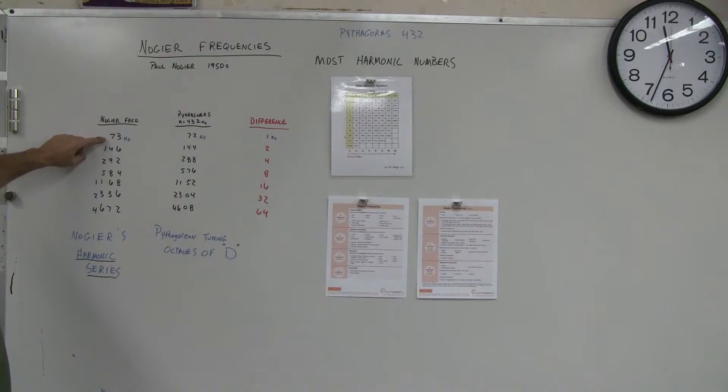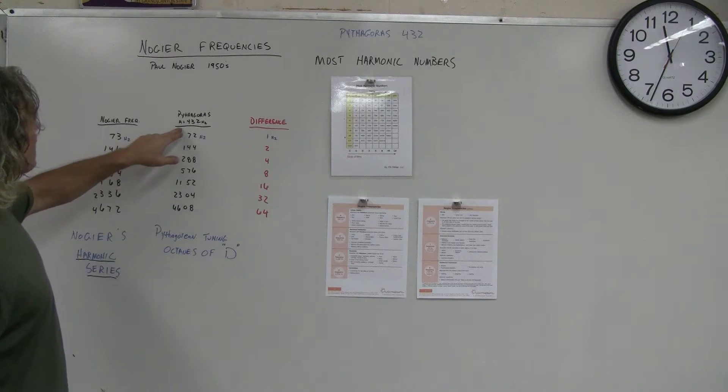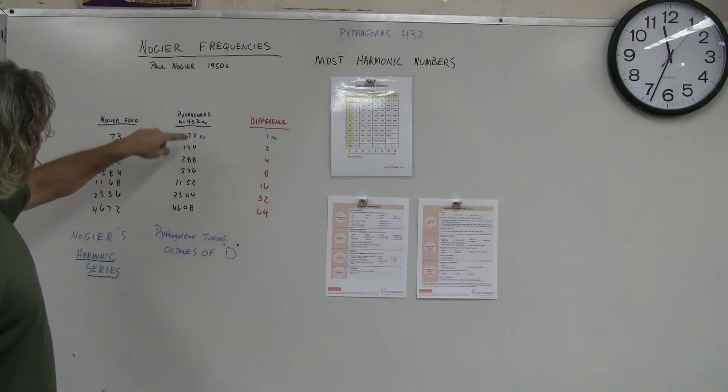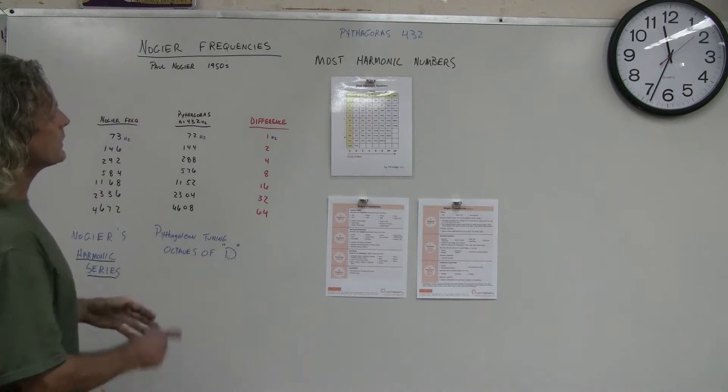All right, so these are the Nogier frequencies: 73, 146, 292, 584, and so on. All right, now here are the Pythagoras A432 Hertz frequencies, all right, in the note of D.